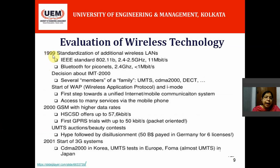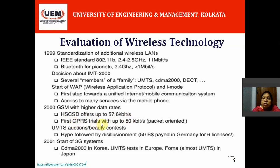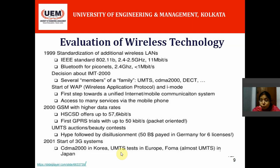In 1999, Bluetooth for Piconets came, along with the IEEE standard 802.11b, and the start of WAP — Wireless Application Protocol. In 2000, GSM with higher data rates arrived: HS-CSD, that is High Speed Circuit Switched Data, offered very high speed over the GSM network. GPRS was introduced in the GSM network and the data rate was increased to 50 kbps. Then came UMTS. In 2001, the start of third-generation mobile telephony: CDMA 2000 in Korea, UMTS tests in Europe, and FOMA in Japan.